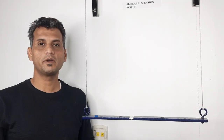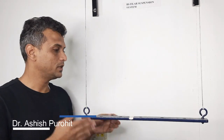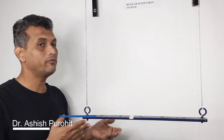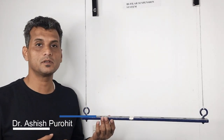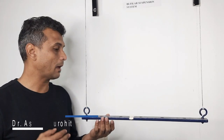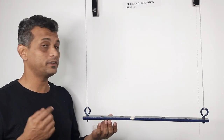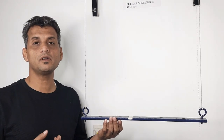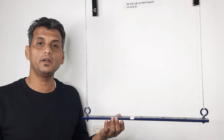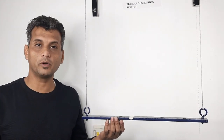Hello everyone and welcome to the Vibration Lab. This is a Bifilar suspension system which is capable of measuring the radius of gyration of a point body and a line body.